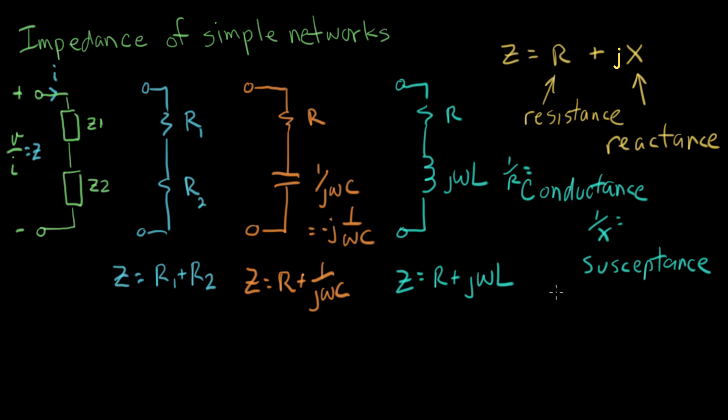And one over X is referred to as susceptance. Now these are all just words that they all sound like they sort of mean the same thing. But engineers wanted to have different words for different parts of the impedance. And these are the words that we use. And finally we have another word for the inverse of impedance, the general idea of one over Z, and that's referred to as admittance.